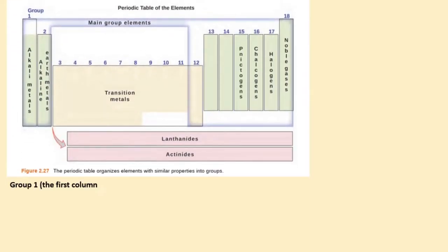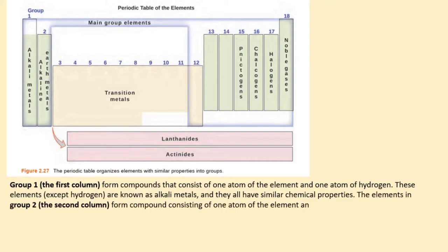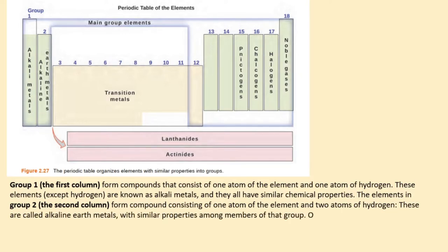Group 1, the first column, form compounds that consist of one atom of the element and one atom of hydrogen. These elements, except hydrogen, are known as alkali metals, and they all have similar chemical properties. The elements in group 2, the second column, form compounds consisting of one atom of the element and two atoms of hydrogen. These are called alkaline earth metals, with similar properties among members of that group.